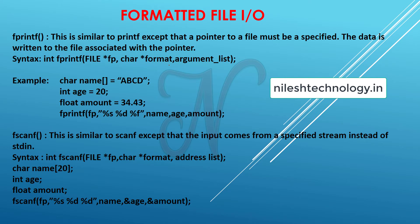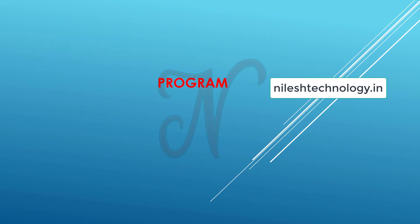First we have to see formatted file input/output. There are two functions: fprintf and fscanf. These are similar to printf and scanf except that these functions are used for file operations. Normal printf prints the message on the output screen (monitor), while fprintf accepts values from variables and writes a formatted string into the file. Similarly, fscanf accepts input from a file and stores it into variables using specific data types.